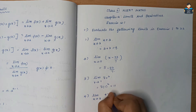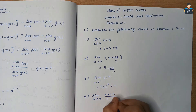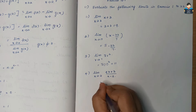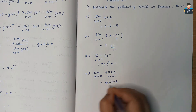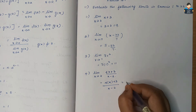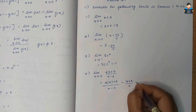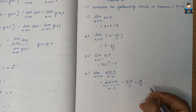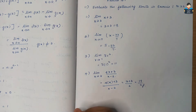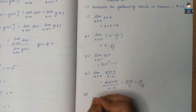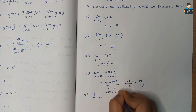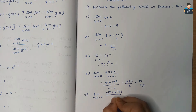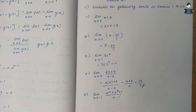Fourth question: limit x tends to 4 of (4x plus 3) by (x minus 2). We substitute x = 4 directly. Fifth question: limit x tends to -1 of (x to the power 5 plus 1) by (x minus 1). We substitute x = -1.